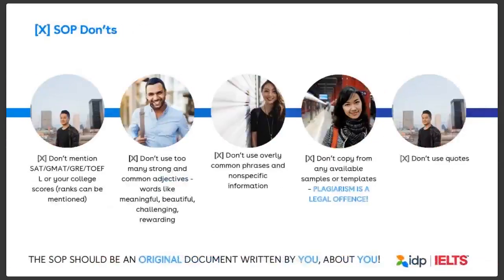When it comes to things you should never do in an SOP, don't mention your SAT, GMAT, GRE, or TOEFL scores, or even your college scores. Ranks can be mentioned — for example, if you scored in the top 10 percent of your class, you can mention that.